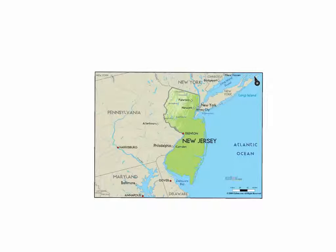The Great Migration was a time when many African Americans moved from the south to the north because of the terrible living conditions and extreme racism that occurred in the south at the time. Because moving up north played a large role in Jacob Lawrence's life, he had a great deal of passion for painting about the Great Migration.